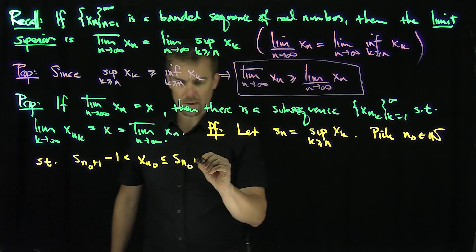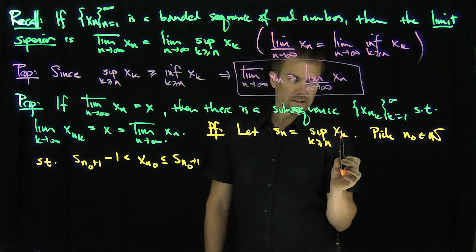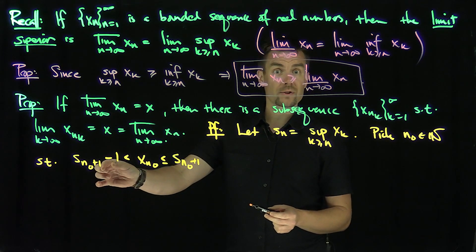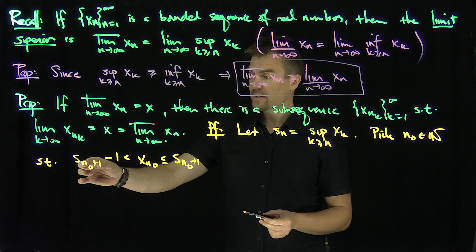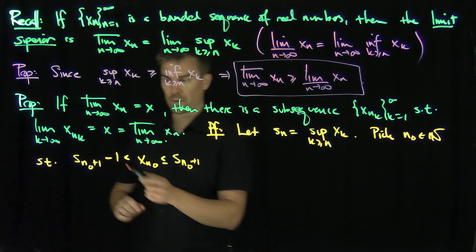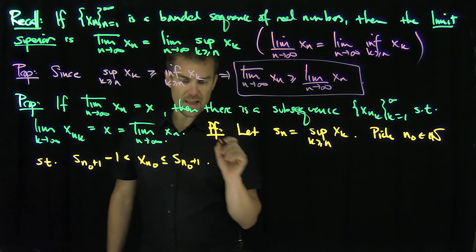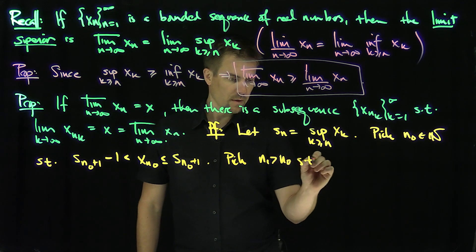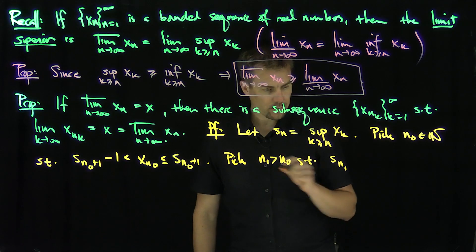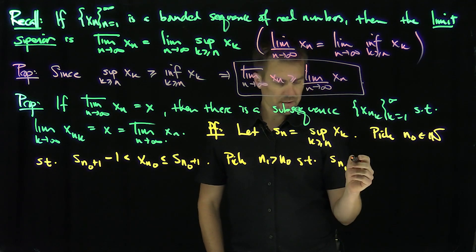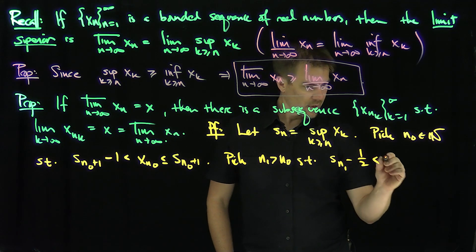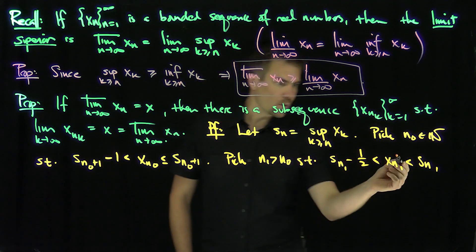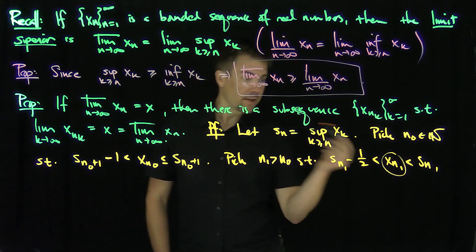Since I plug in n_0, for example, I know I can find an x in that sequence over that set which is always within 1 of the supremum. Then pick n_1 greater than n_0 such that s_{n_1} minus one-half is less than x_{n_1}, which is less than or equal to s_{n_1}. In other words, I can find this n_1 and x_{n_1} with this property by the same supremum approximation.